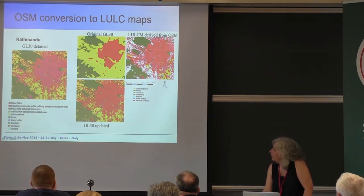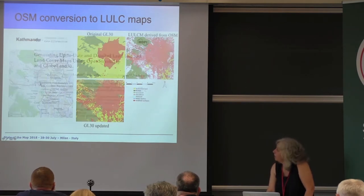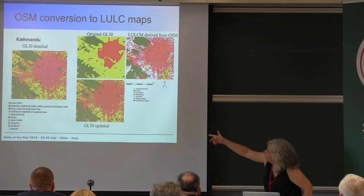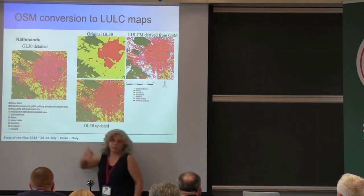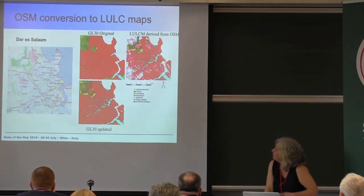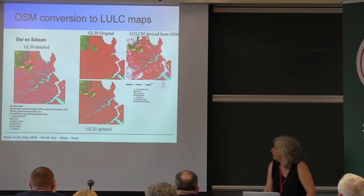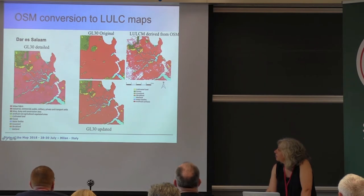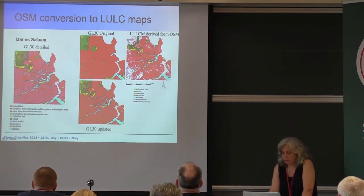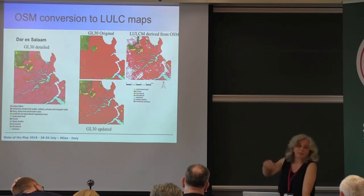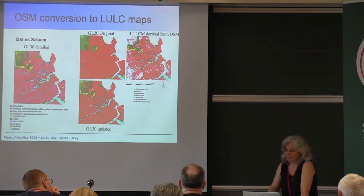Since OSM has more detail, we can use more detail in some classes, like urban classes. Instead of just saying 'urban' as artificial surfaces, here we could separate urban fabric from commercial and other sub-classes. The same approach was applied to Dar es Salaam. There are problematic classes — for example, we get large regions classified as water which were actually tagged as wetlands, but there are buildings inside those regions. Probably someone classified flooding areas as wetlands, so when we pick up wetlands as water regions, we get mistakes. This is one limitation.